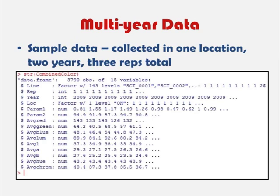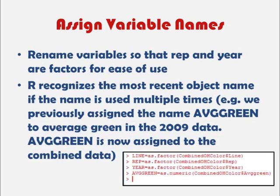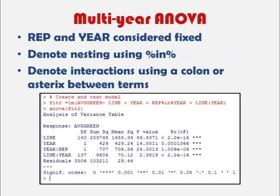Now that we have our two-year data, we want to check that data just to make sure everything is correct using the structure command. We now have data collected in one location over two years with a total of three reps. The first thing we're going to do is rename our variables so that they're factors and not treated as integers. Note that R will recognize the most recent object name, so if you use the same name multiple times, R will use only your latest iteration. We had 'average green' before for our 2009 data, and now we're using that name for our combined dataset.